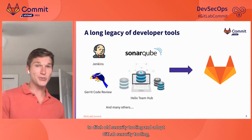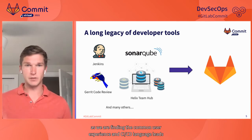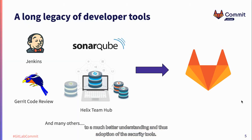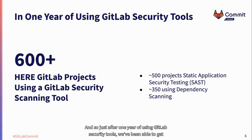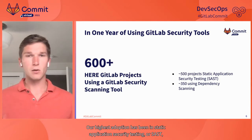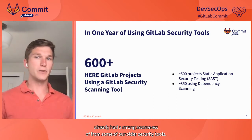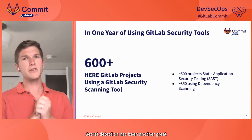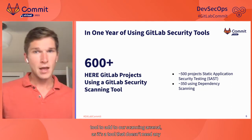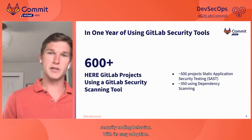We're encouraging teams to ditch old security tooling and adopt GitLab security tooling, as we find the common user experience and CI-CD language leads to a much better understanding and adoption of the security tools. Just after one year of using GitLab security tools, we've been able to get over 600 Here GitLab projects using at least one GitLab security scanning tool. Our highest adoption has been in static application security testing, or SAST, and dependency scanning — two tools that teams already had strong awareness of from our older security tools. Secret detection has been another great tool to add to our scanning arsenal, as it doesn't need any configuration for any technical stack and quickly drives awareness to bad security coding behavior.